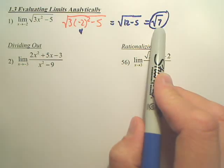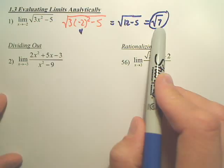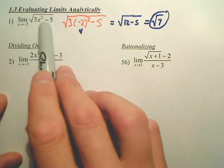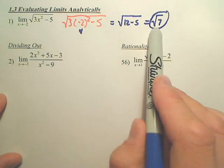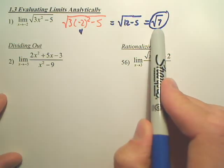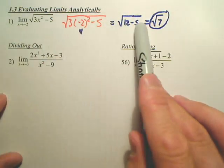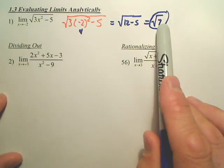So, the limit as x approaches negative 2 of this function would be the square root of 7. Basically, the output is the square root of 7, so so is the limit. If you approach from both sides of negative 2, you'd approach the square root of 7. That's the easiest. Always, always, always plug it in.